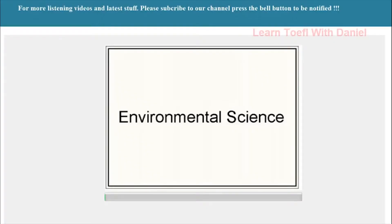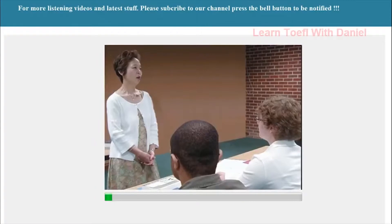Listen to part of a lecture in an environmental science class. We've been talking about the loss of animal habitat from housing developments and growing cities — small habitat losses. But today I want to begin talking about what happens when habitat is reduced across a large area. There are animal species that require large areas of habitat, and some migrate over very long distances.